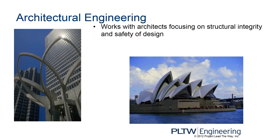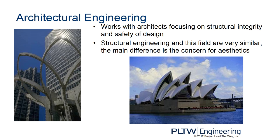Architectural engineers also focus on making sure the building is easy to construct — that construction crews can check for any faults or errors that may occur, and that it maximizes the use of money to build it efficiently. Structural engineering is very similar; the main difference is that an architectural engineer is a little more concerned with aesthetics, whereas a structural engineer focuses solely on making sure the structure is safe, sound, and integrated with the design.